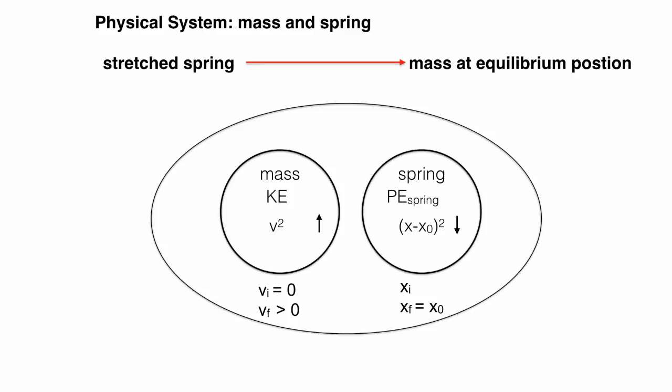The mass starts at rest and is moving at the end, so we know that the speed went up and so did the kinetic energy. The mass started away from the equilibrium position and ends at the equilibrium position, so the indicator for spring potential energy went down and so did the potential energy.